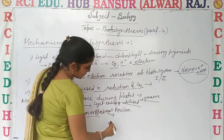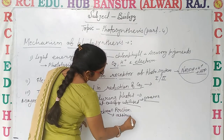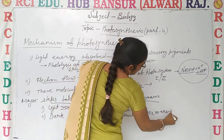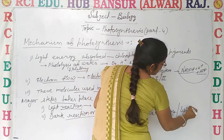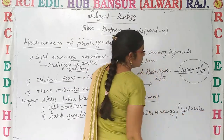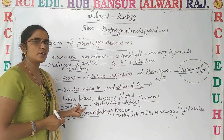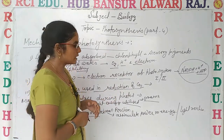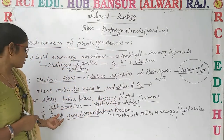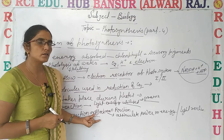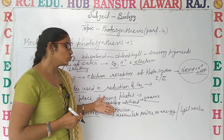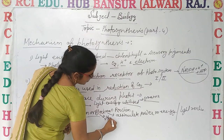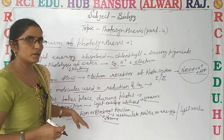The dark reaction does not require light. Instead, it assimilates the power or energy which is generated during the light reaction. So the light reaction takes place in the presence of sunlight in the granum region of the chloroplast, while the dark reaction takes place in the absence of light — in the stroma region of the chloroplast — utilizing the energy produced by the light reaction.